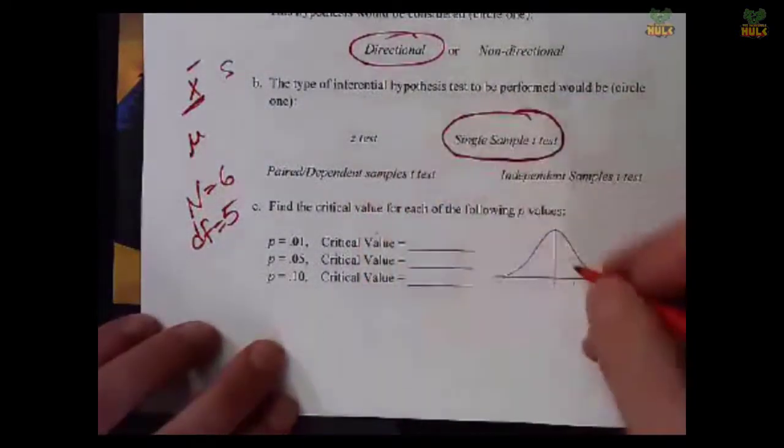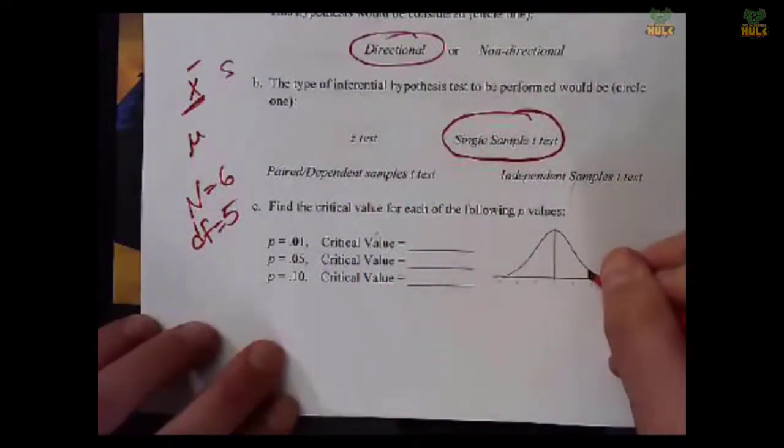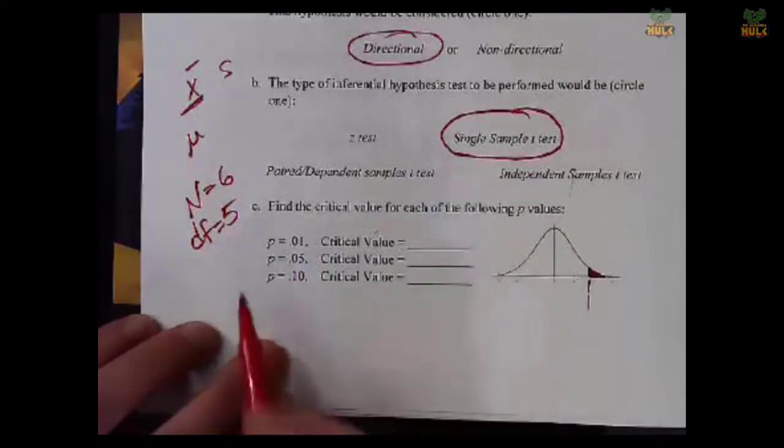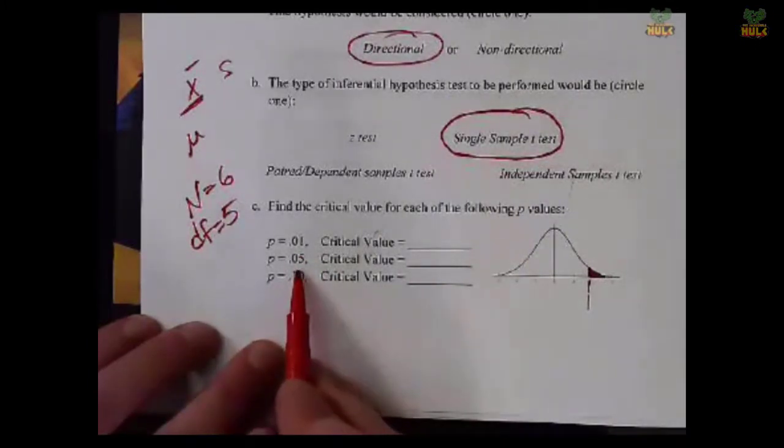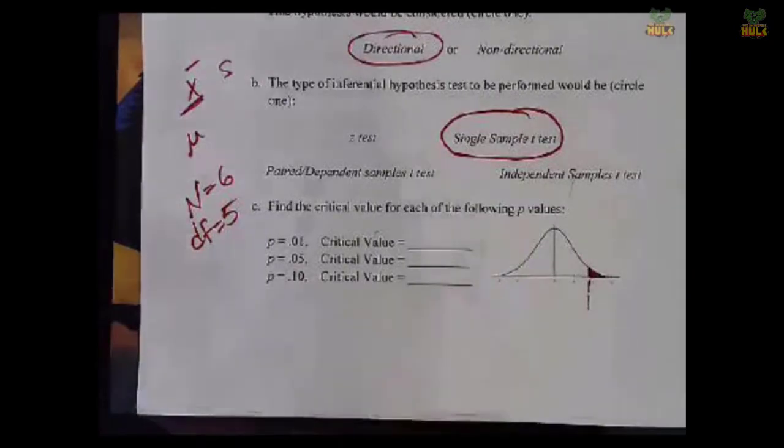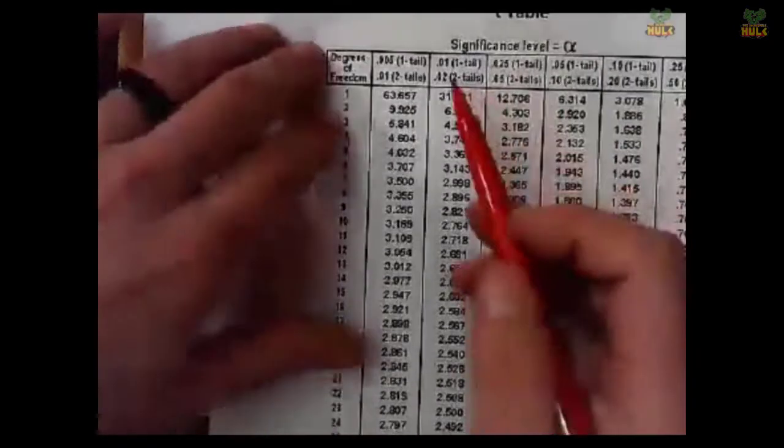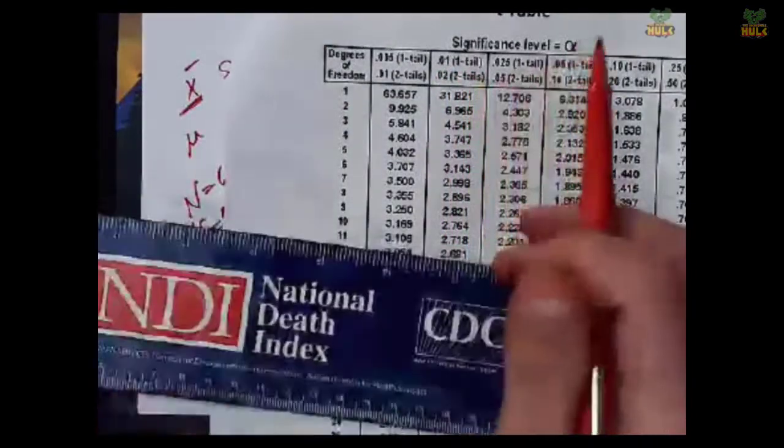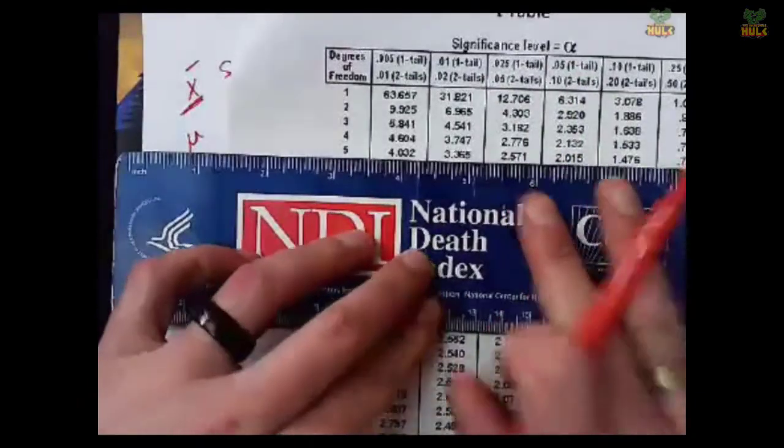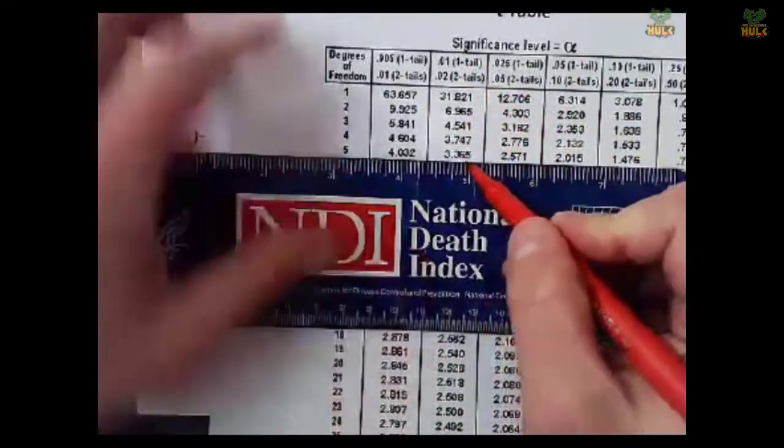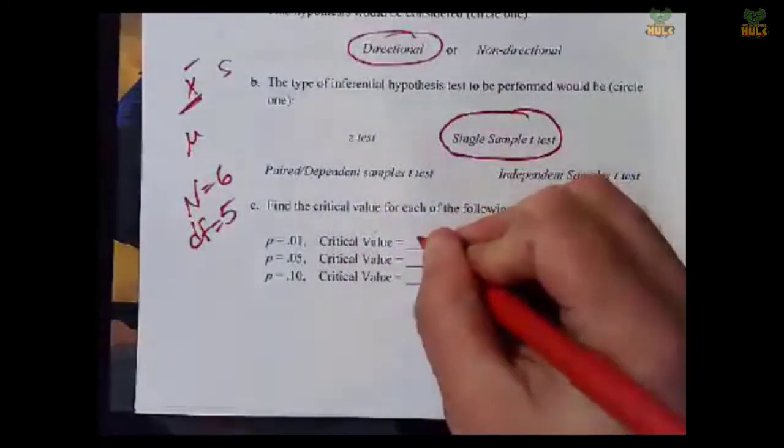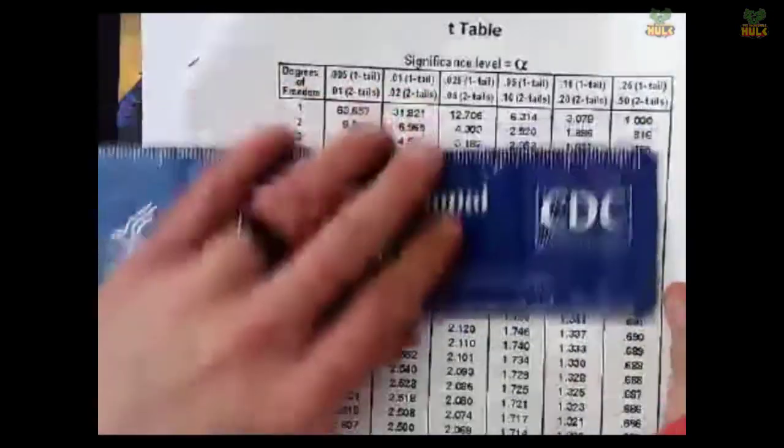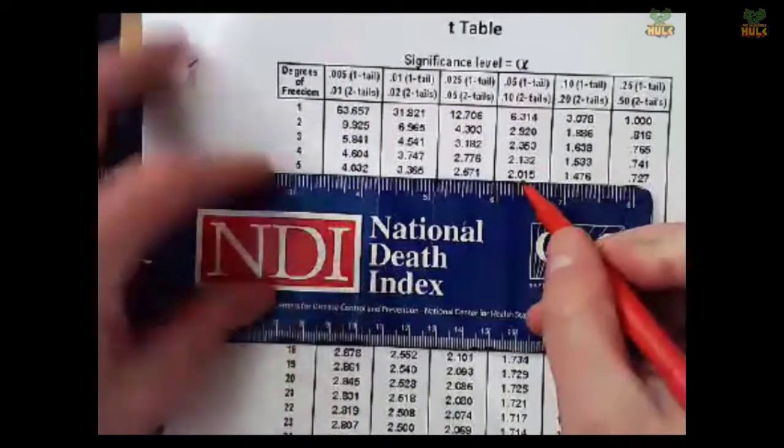But we do not know population standard deviation, so we would have to get it from this x data, which means we are in the world of a single sample t-test. Makes sense, since this is a single sample t-test video. The next part is to find the critical value for each of the following p-values. Now, what was our n? We had six students in this class, so n was 6, which means degrees of freedom is equal to 5. Because this is a one-tailed test in the positive direction, we're asking what is the cutoff associated with each of these different percentages?